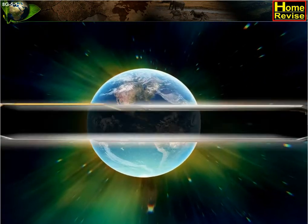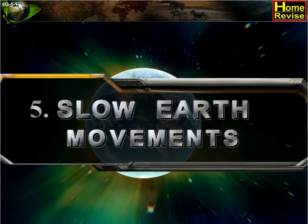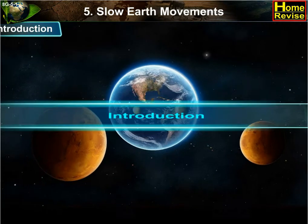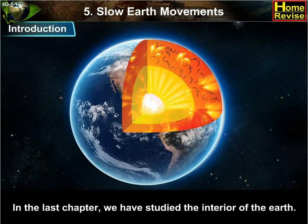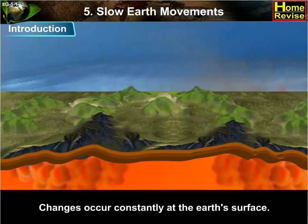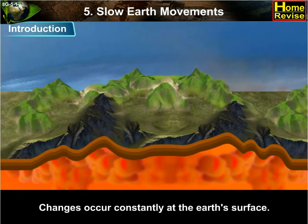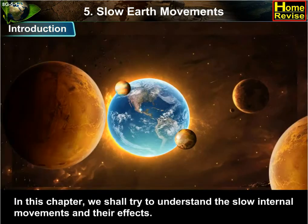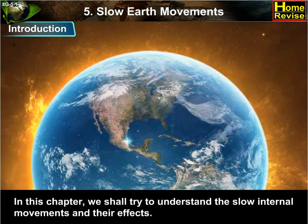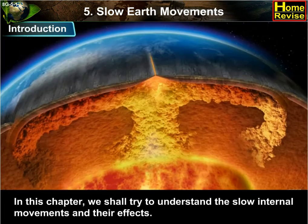Chapter 5: Flow Earth Movements. In the last chapter, we have studied the interior of the earth. Changes occur constantly at the earth's surface. These changes are caused by internal movement as well as external processes. In this chapter, we shall try to understand the slow internal movements and their effects.